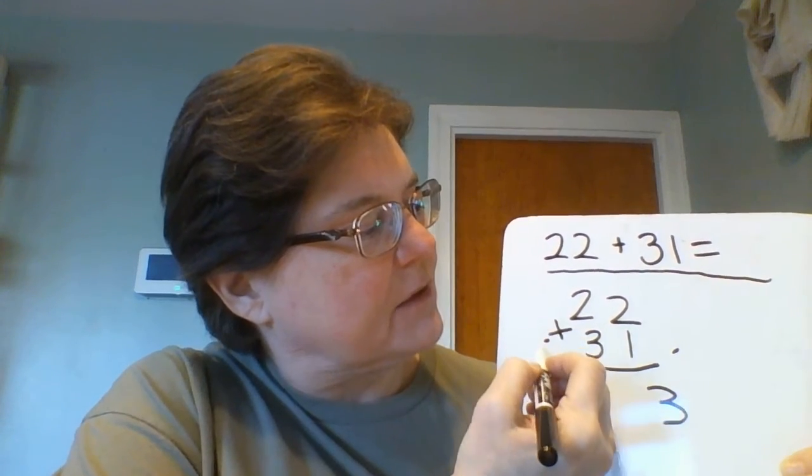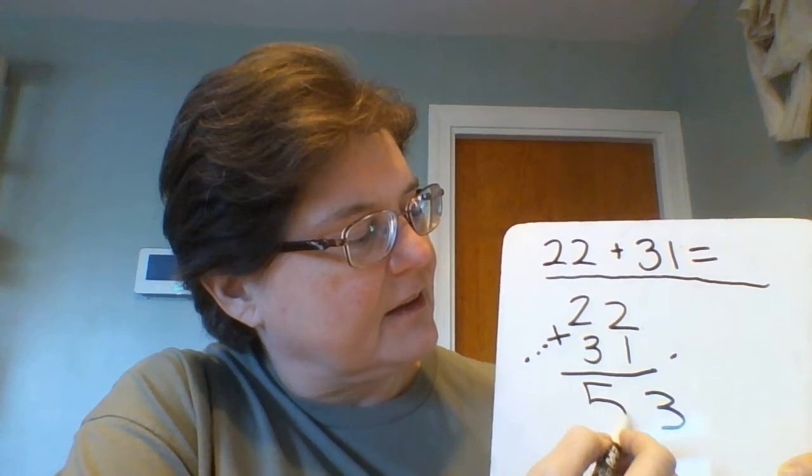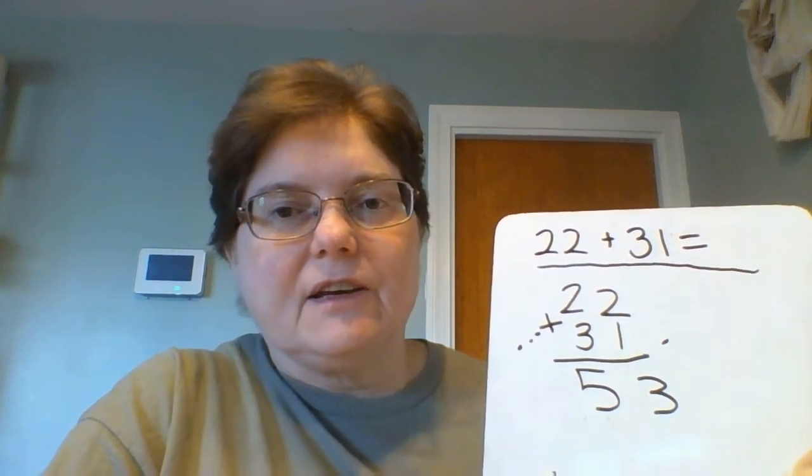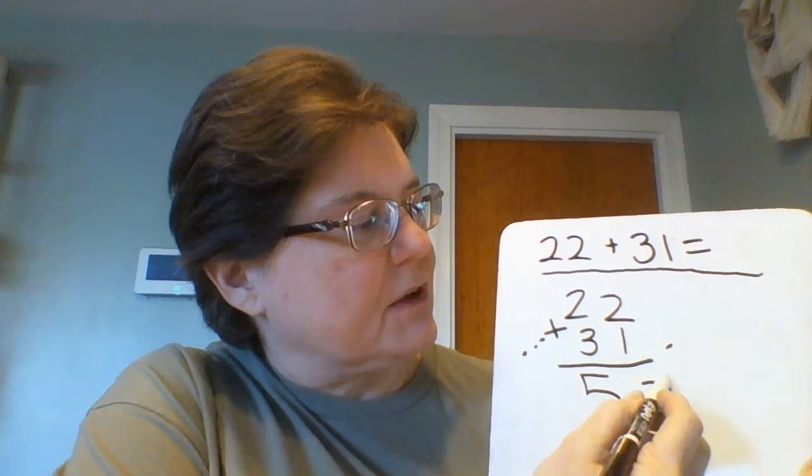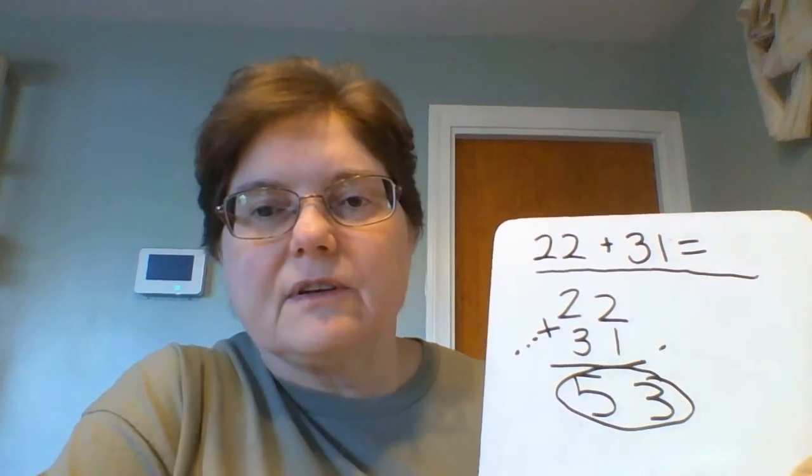Then you do the tens. Two, three, four, five. Five. So 22 plus 31 equals 53.